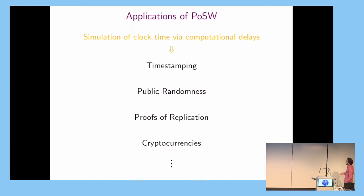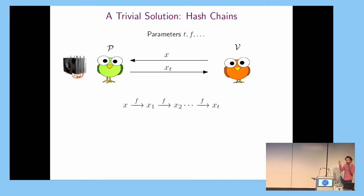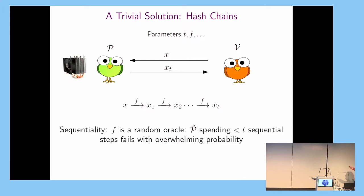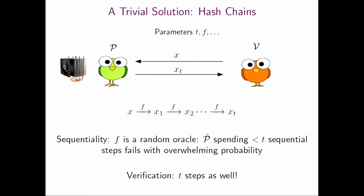If sequentiality were the only thing we cared about, there's a trivial solution: take x, apply f repeatedly to get x1, x2, ..., xt, and send this back. If f is a random oracle, this is highly sequential. But the problem is the prover is useless to the verifier — the verifier, to be convinced, has to do all the work again. So we need a gap in the work between the prover and the verifier.